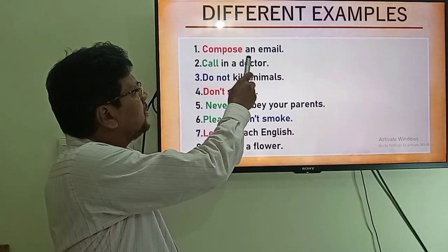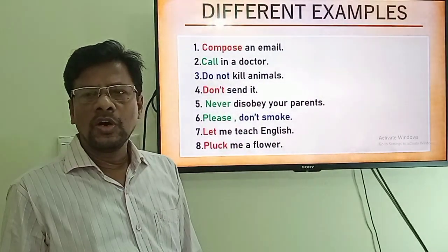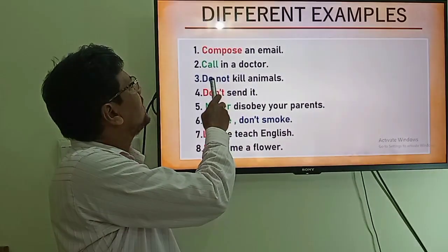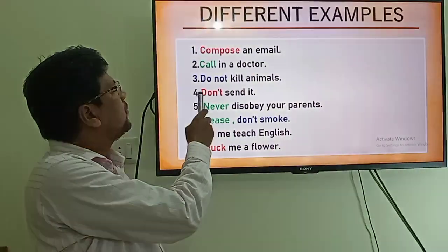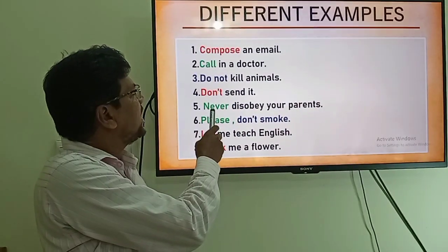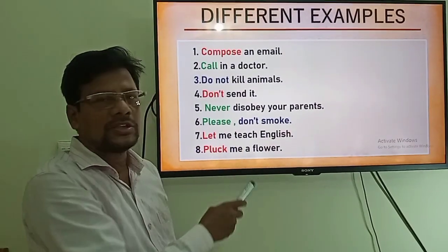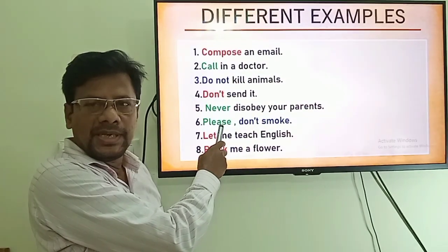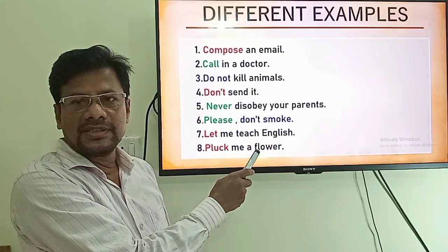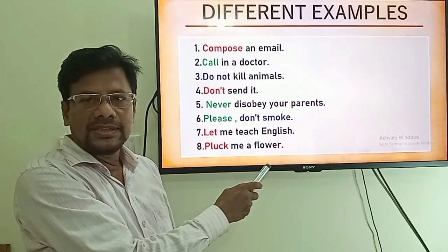1. Compose an email. 'Compose' is the base form of verb. 2. Call a doctor. 'Call' is the base form of verb. 3. Do not kill animals — the sentence starts with 'do not'. 4. Don't send it — the sentence starts with 'don't'. 5. Never disobey your parents — the sentence starts with 'never'. 6. Please do not smoke — the sentence starts with 'please' or sometimes 'kindly'. 7. Let me teach English — the sentence starts with 'let'. 8. Pluck me a flower — the sentence starts with the verb.